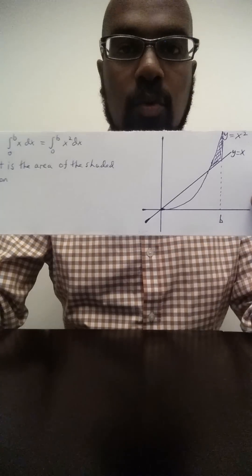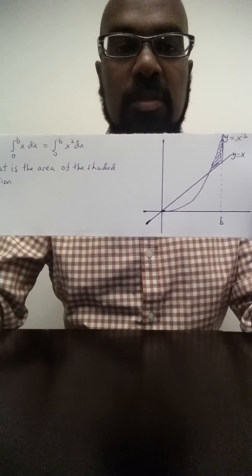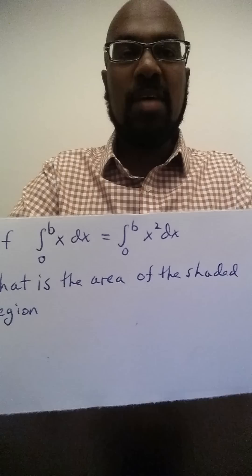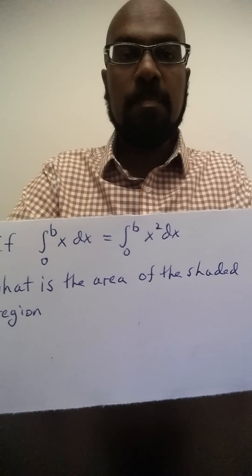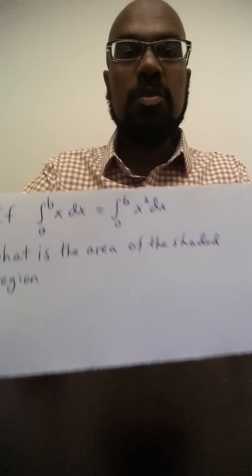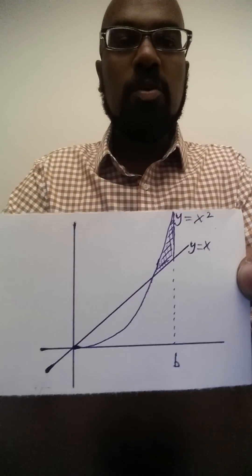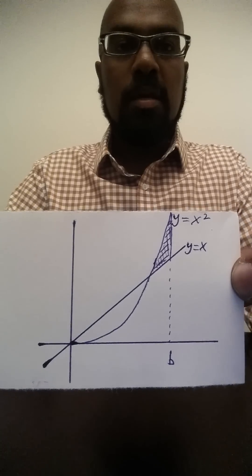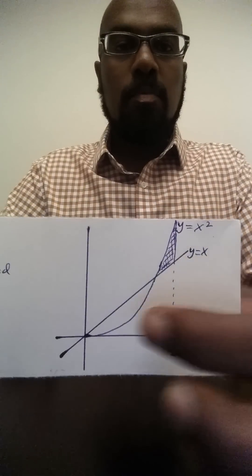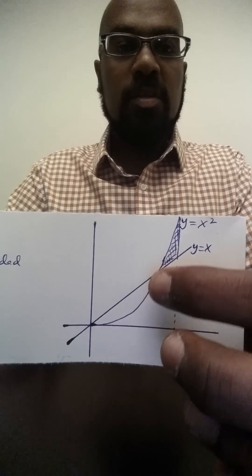One way we could proceed with this problem is to determine what b is by evaluating these two integrals, and then once we do that we can compute the corresponding area by computing the integral from wherever this point is to b of x squared minus x dx.